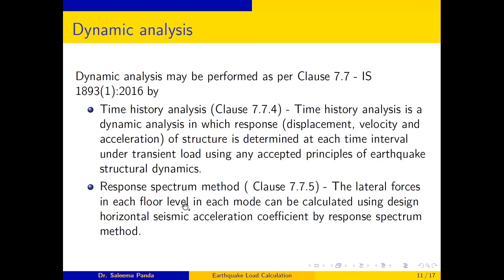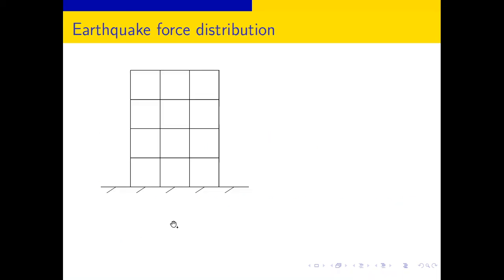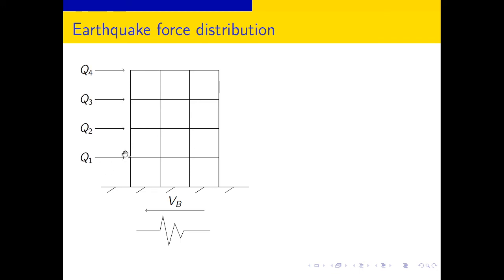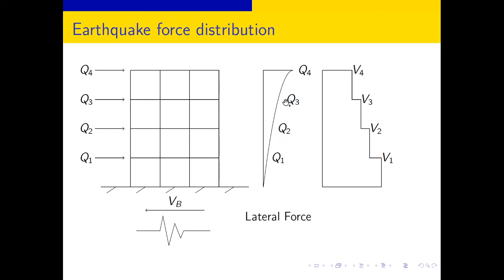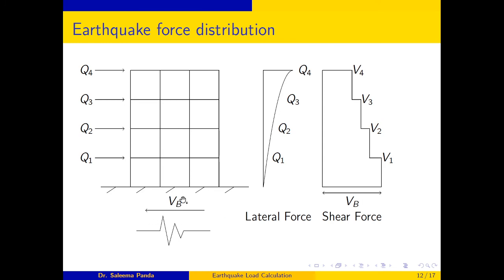The lateral force at each floor level in each mode is calculated using the design horizontal acceleration coefficient from the Response Spectrum Method. When an earthquake acts on a structure, a base shear is generated and transferred to every floor as lateral forces Q1, Q2, Q3, Q4. The cumulative force (CF) at each level is the sum of floor forces above it, and the total at the base equals Vb, the base shear distributed to all floors.